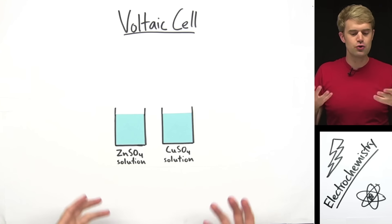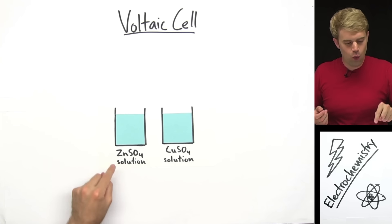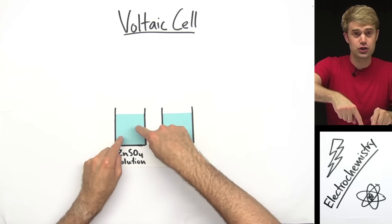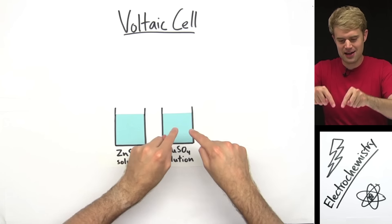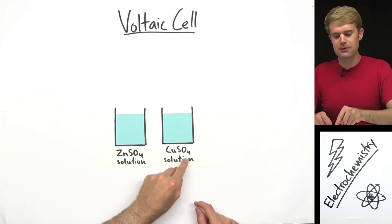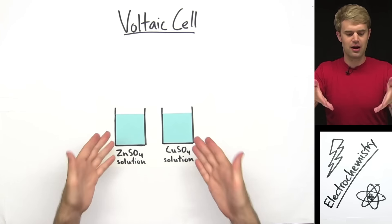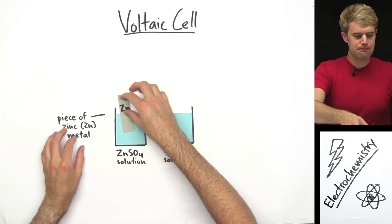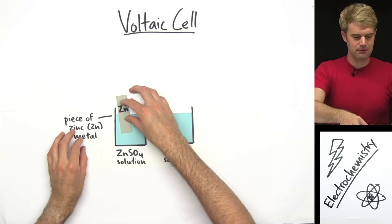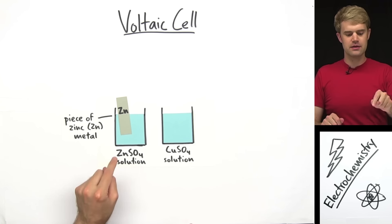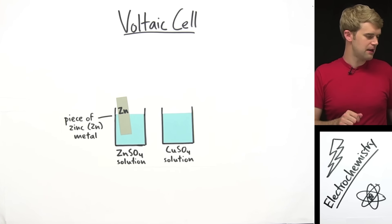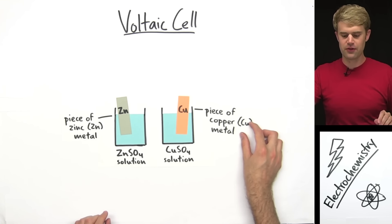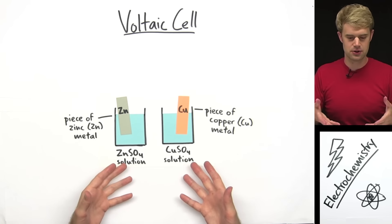We start with two beakers or containers of water. Into one we dissolve some zinc sulfate to make a solution, and into the other we dissolve some copper sulfate to make a solution. Then we take a piece of zinc metal and put it in the zinc sulfate solution, and a piece of copper metal and put it in the copper sulfate solution.